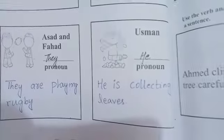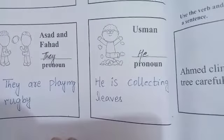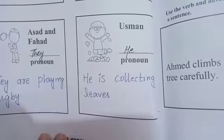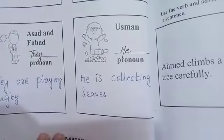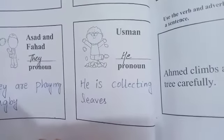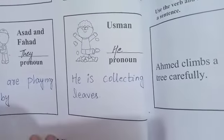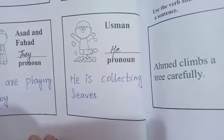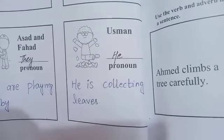In the next figure, Usman, a boy, is collecting leaves. For males, the pronoun used is 'he'. The sentence according to the picture is: he is collecting leaves.